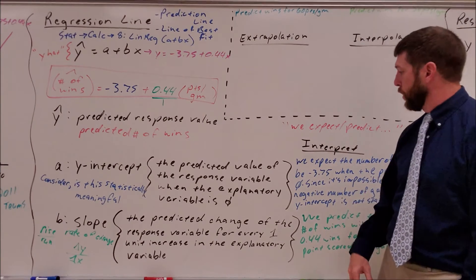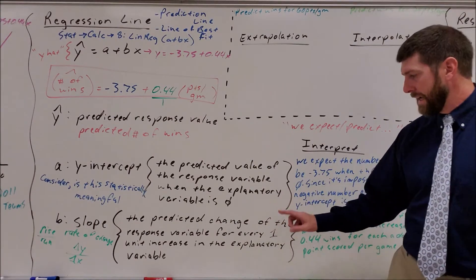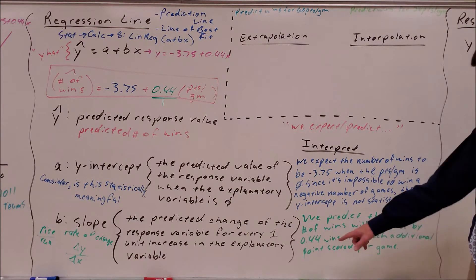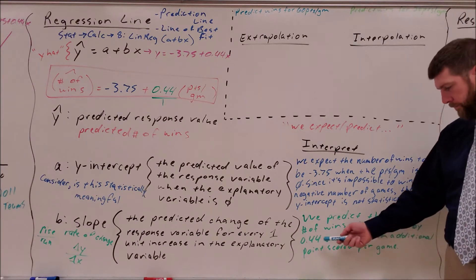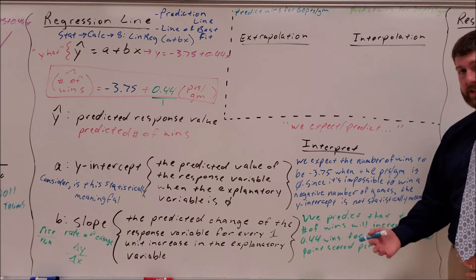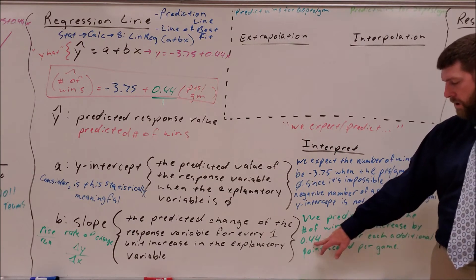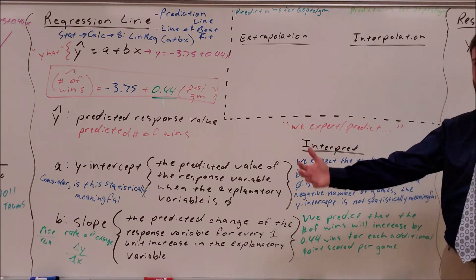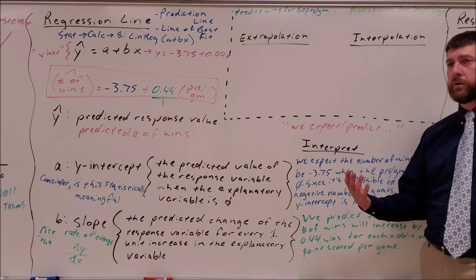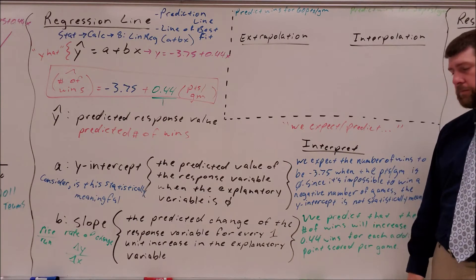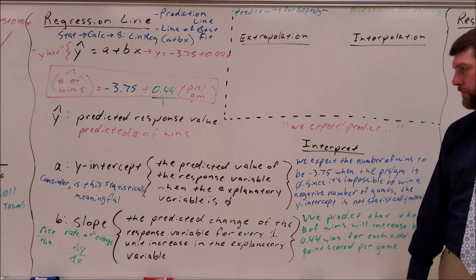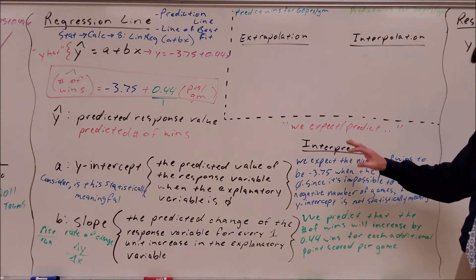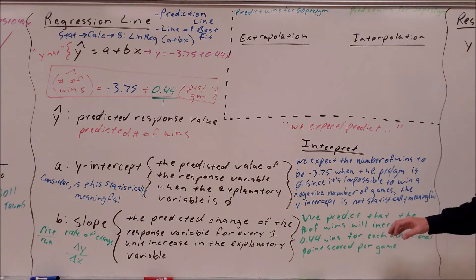So if a team averaged two more points per game, they should have about 0.8 more wins on the season — almost one more game. If they averaged five more points per game, that team should have about two more wins. That's the idea we get from interpreting the slope of the regression line, and we need to make sure we understand how these interpretations work.